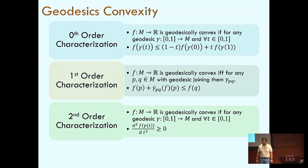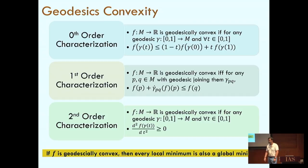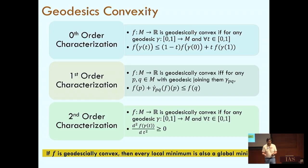You can show this property quite easily: if f is geodesically convex, then every local minimum is also a global minimum. If a function had two different local minima with different values, that function cannot be geodesically convex — you cannot put a metric on that. You do need the assumption that the two points are connected by a geodesic.